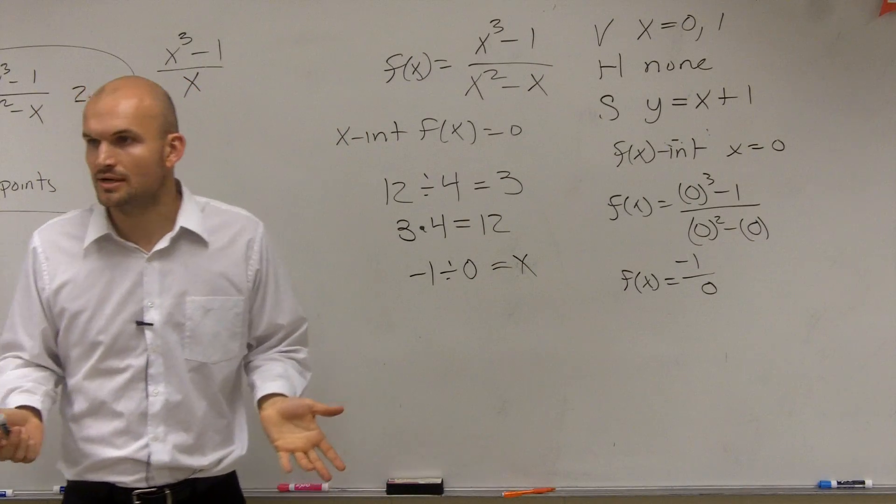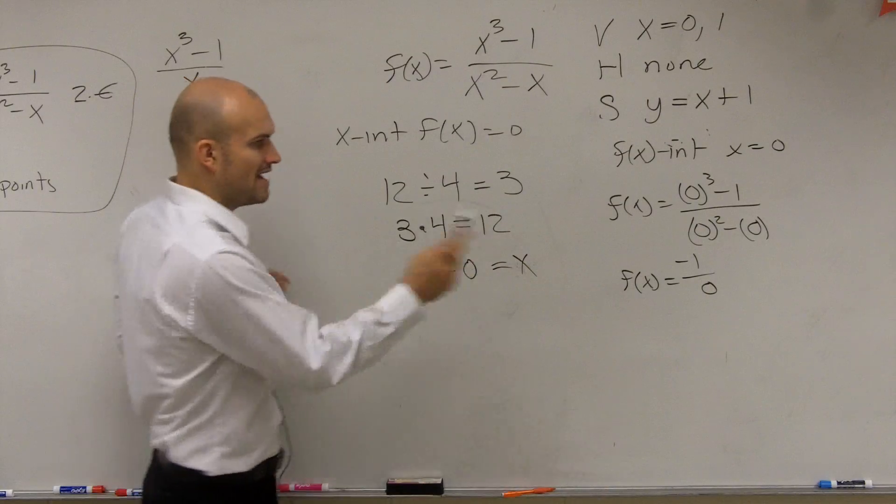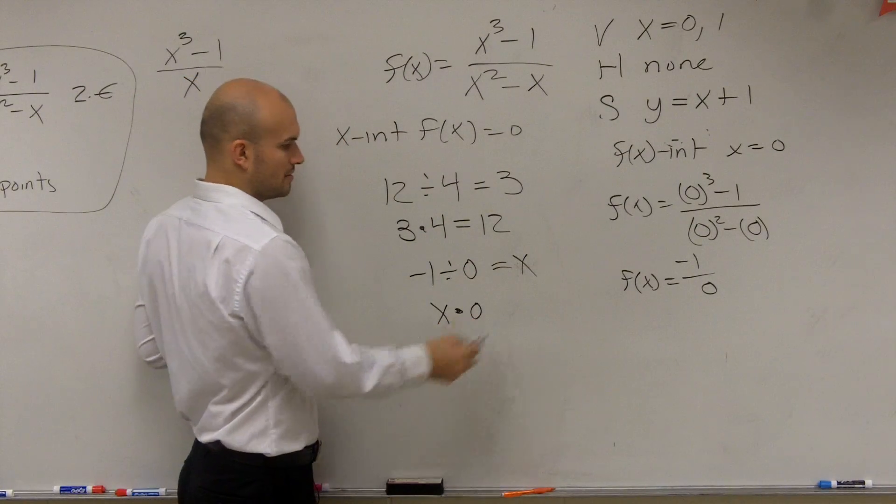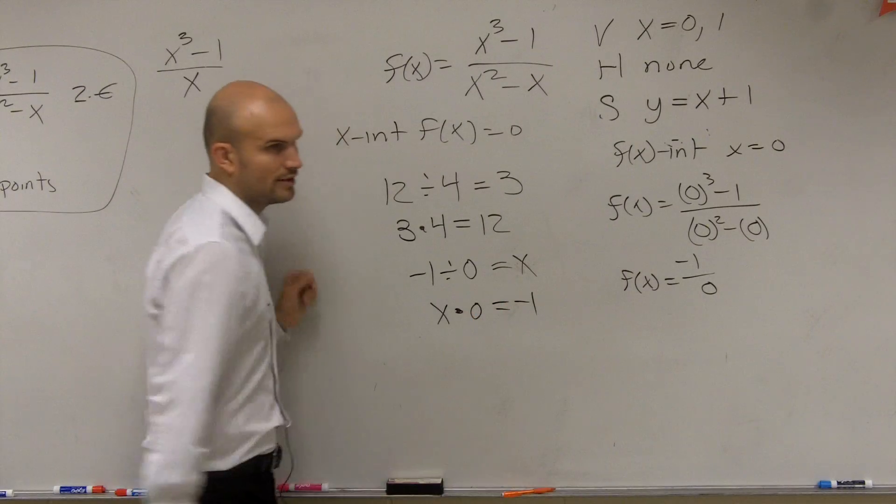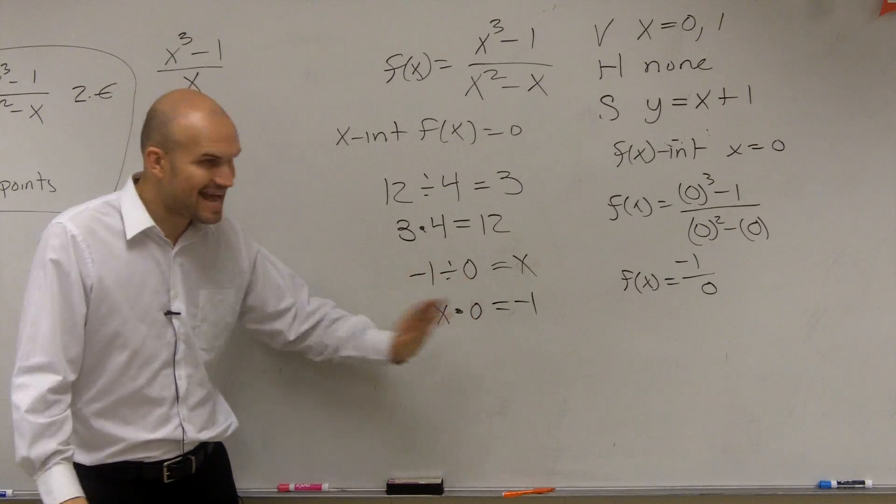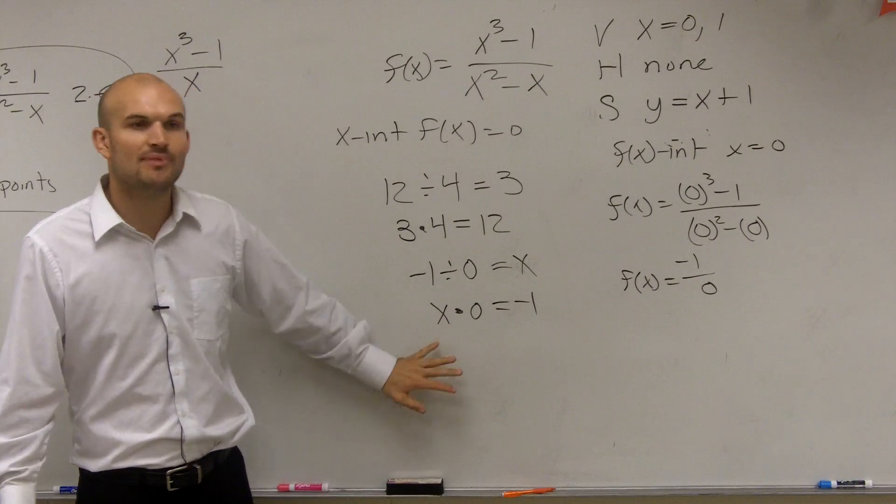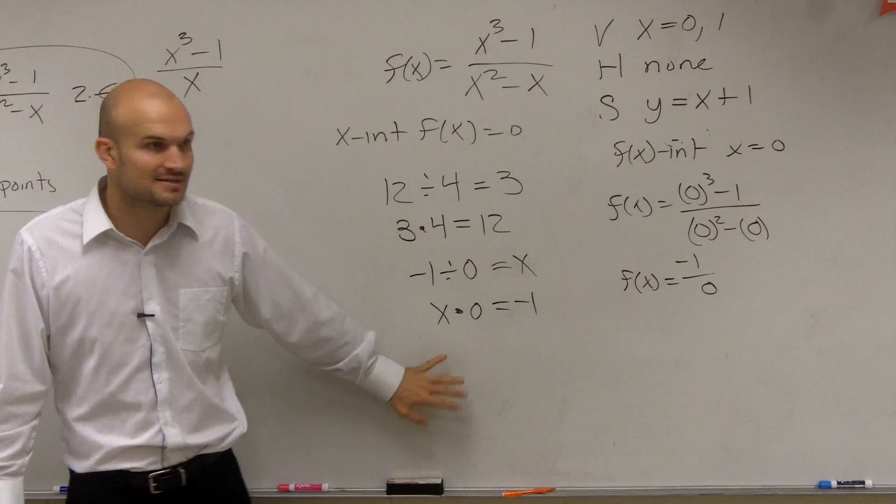We don't know what the answer is, but let's say it's x. Then that means x times 0 equals negative 1. Is it possible to multiply anything times 0 to get negative 1? No. That's why this is impossible. That's why it's undefined.